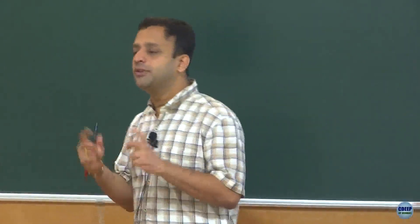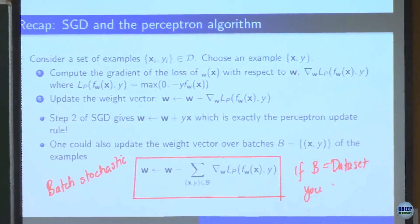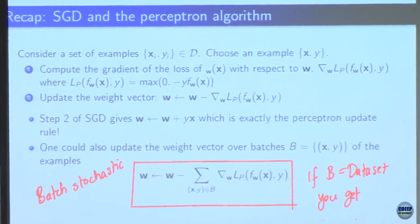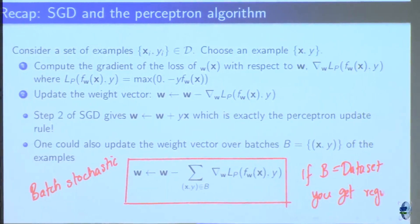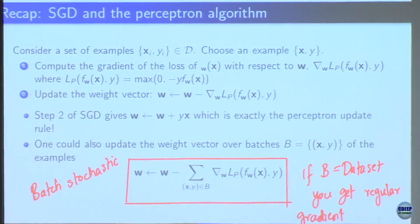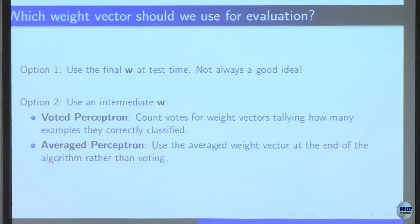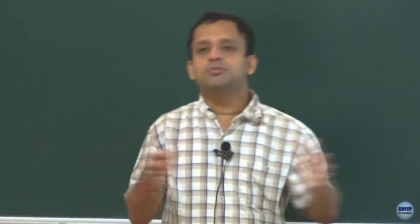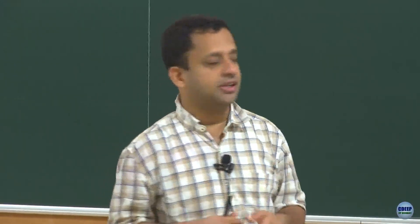We are trying to give a gradient descent perspective. If B is the entire dataset you get the regular gradient descent update. Also, you do not have to necessarily subscribe to using the w at the end of the algorithm. You could use voted perceptron — for example, use multiple intermediate w's and give weightage based on how many examples that w correctly classified.